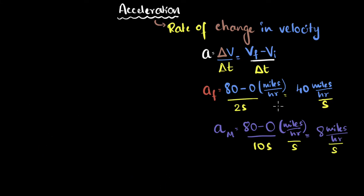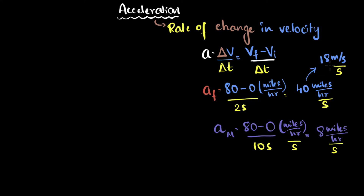Now let's see why acceleration was so tricky for me. First and foremost, miles an hour is not the standard unit. The standard unit is meters per second. So if I convert this 40 miles per hour, it turns out to be about 18 meters per second. Don't worry about the conversion in this video — we'll tackle that separately. But that means the acceleration in standard terms becomes 18 meters per second per second. Now, it's saying that every second, my Ferrari is picking up a velocity of 18 meters per second. So if we simplify the unit, it then becomes meters per second squared.